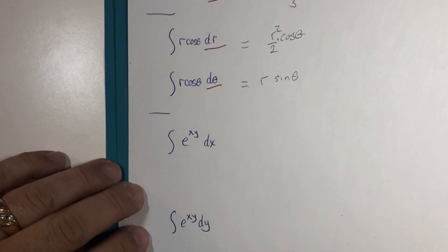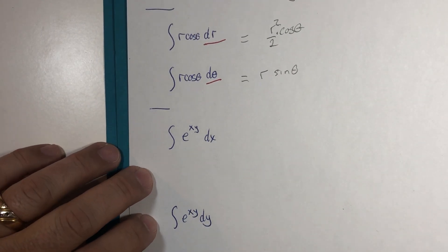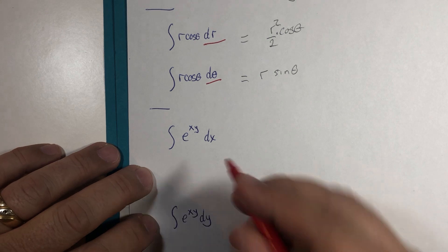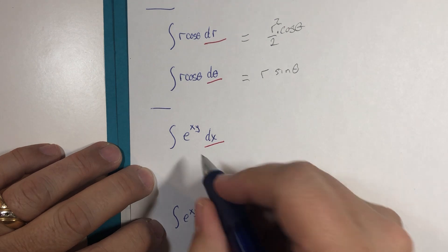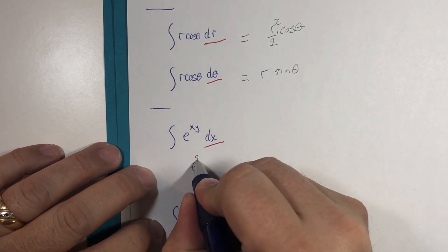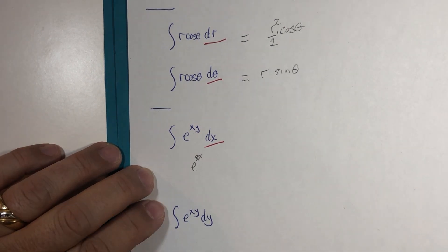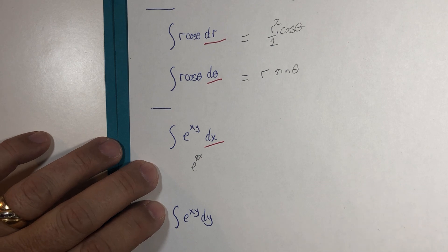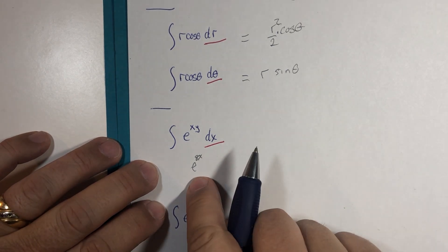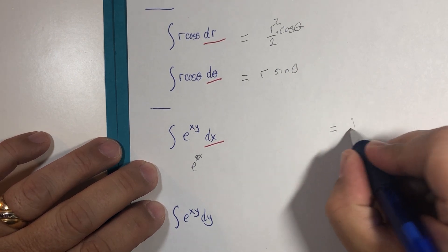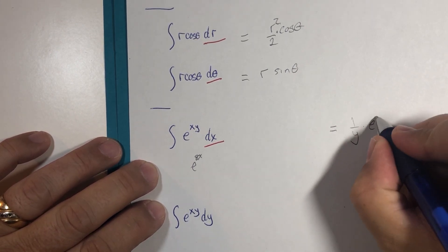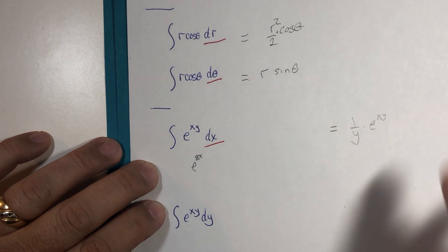And finally our last little piece before we hit the real chapter 14. X is the variable, that makes this a constant. We could think of this as integrating e to the 8x which we did a moment ago. The integral of that was 1 over 8 times e to the 8x. The integral of this is going to become 1 over y times e to the xy plus a constant.